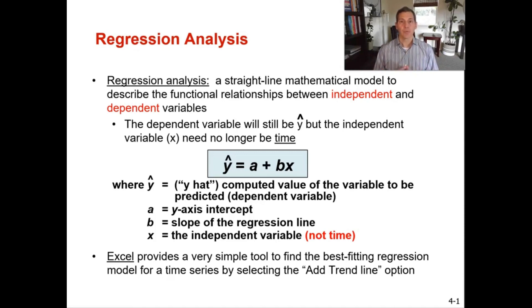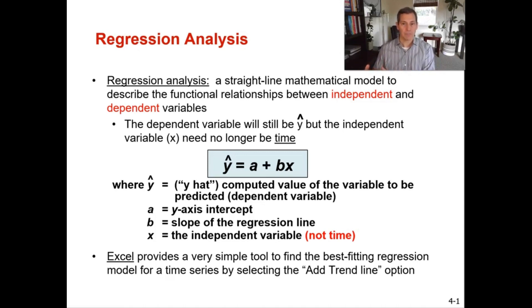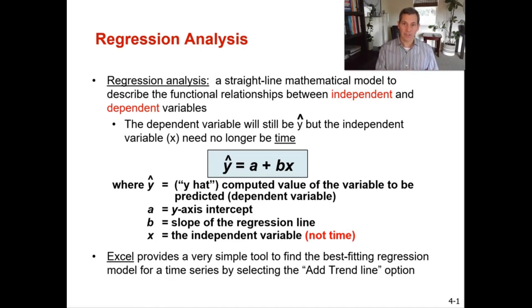The example we're going to use for regression analysis today is area payroll in a specific city versus sales for a construction company, and it doesn't matter what year it is. In the least squares example, it was year 1, year 2, year 3, year 4. In this case it's going to be two variables, and the independent variable is no longer time. That's the big difference with regression analysis.